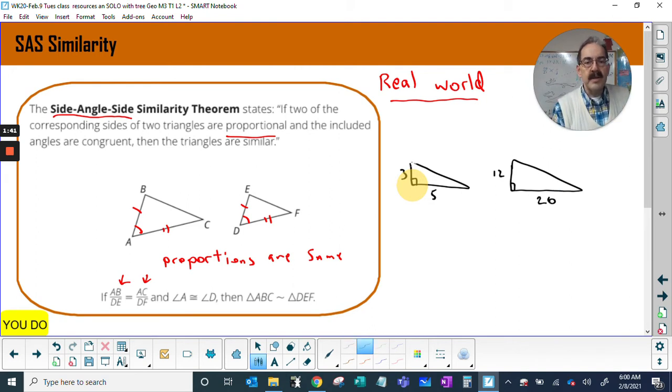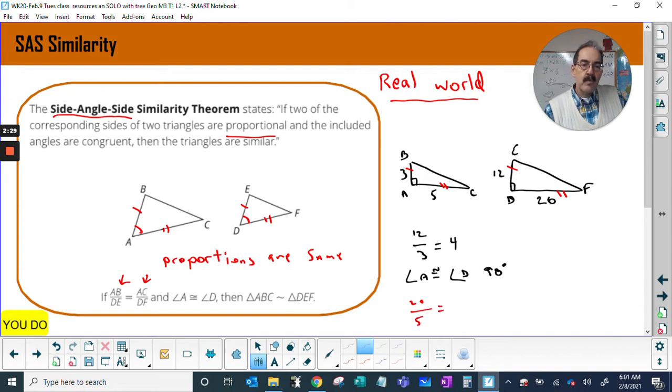So the idea here is this side to this side: AB to DE. I'm gonna make it easy math: 12 divided by 3. We have angle A congruent to angle D—those are 90 and those are 90 degrees. Then the last one, AC to DF: 20 goes to 5, which is 4. The key here is the proportions are the same if I have one angle.